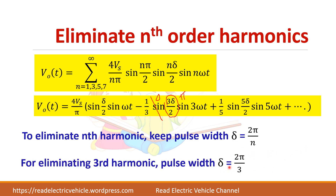When δ = 2π/3, the third harmonic becomes zero. To eliminate the fifth harmonic, set δ/2 such that sin(5δ/2) = 0, i.e., 5δ/2 = π. This is how specific harmonics can be targeted by adjusting the pulse width.